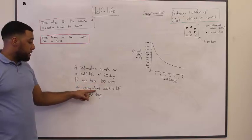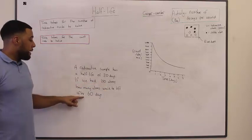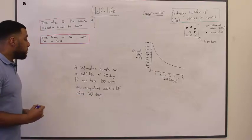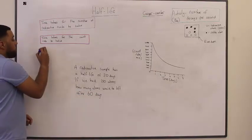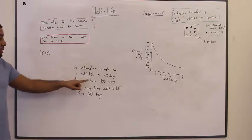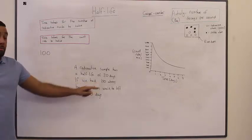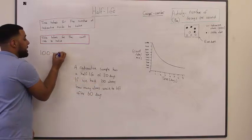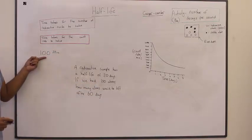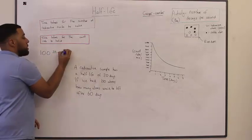Well, let's start off with what we know. We know that we started with a hundred radioactive atoms. And after twenty days, the number of radioactive atoms would half to fifty.